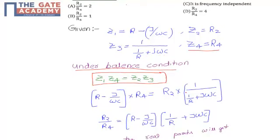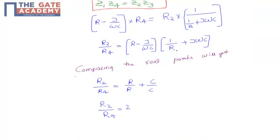R2/R4 will become (R - j/(ωC)) times (1/(1/R + jωC)). Comparing only the real parts, we get R2/R4 equals R times 1/R, which is R/R, minus j/(ωC) times jωC. Here j times j, which is j squared, becomes minus 1. So minus times minus plus ωC/(ωC), then ω cancels, C/C. After solving, R/R is 1, C/C is 1.